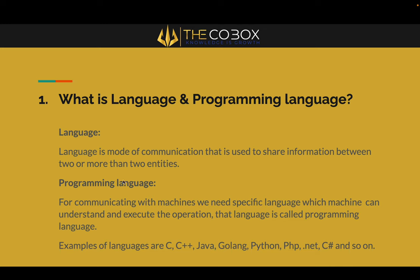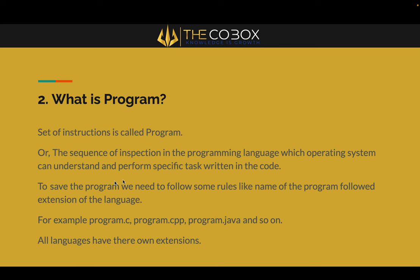That is the basic definition of a programming language. Now the second point is: what is a program? Simply, a program is a set of instructions — or more elaborately, a sequence of instructions in a programming language which the operating system can understand. A program is a sequence of instructions that will execute on the system to perform any specific task. To save the program we need to follow some rules: name of the program followed by the extension of the language, like program1.c, program.cpp, program.java — that extension shows which language you are using.